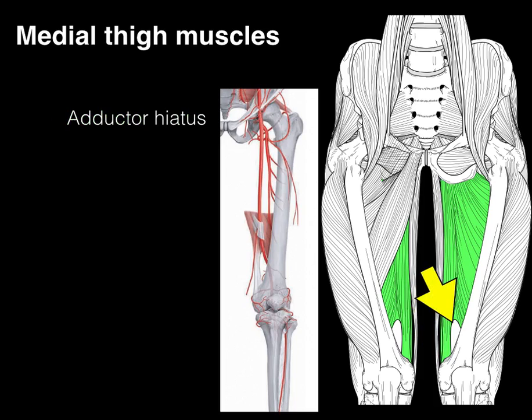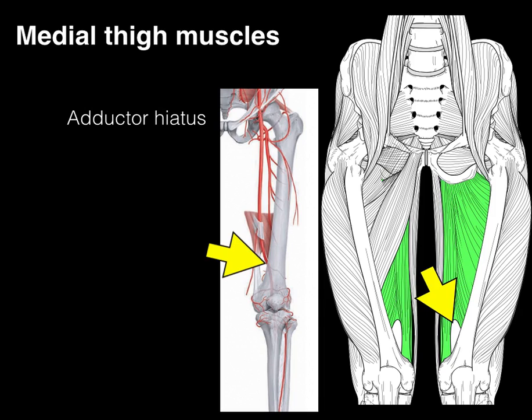The adductor hiatus is significant because if we look at this view of the left thigh, there's our femoral artery coursing down. To get to the back of the knee in the popliteal fossa — where the femoral artery continues as the popliteal artery on the back of the knee — it courses through this adductor hiatus. That's how it gets to the back of the knee to become the popliteal artery. So the femoral artery and vein both go through the adductor hiatus.